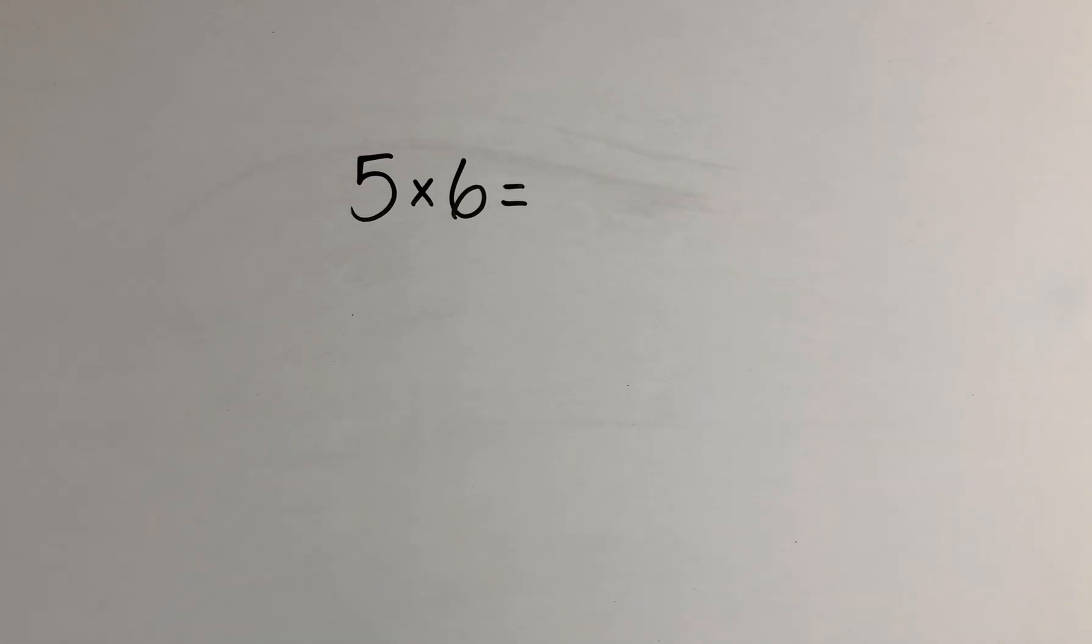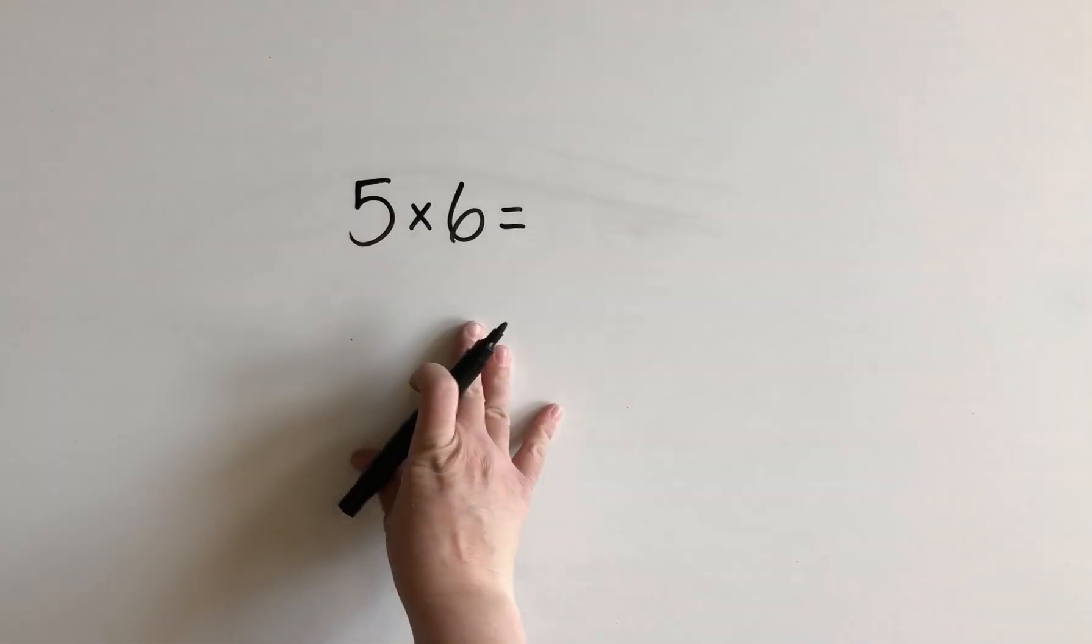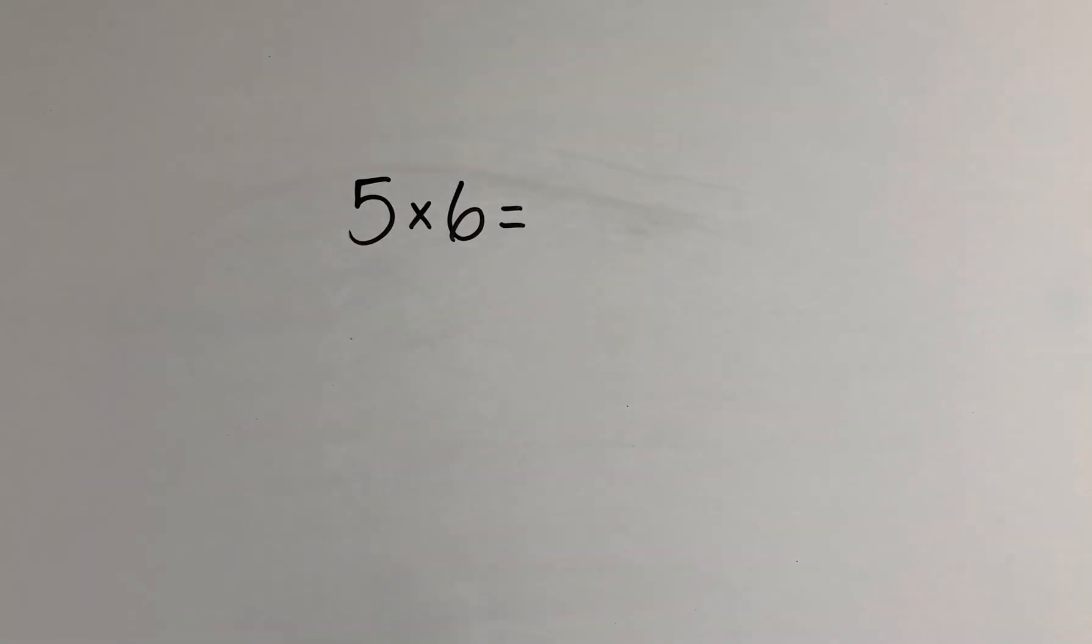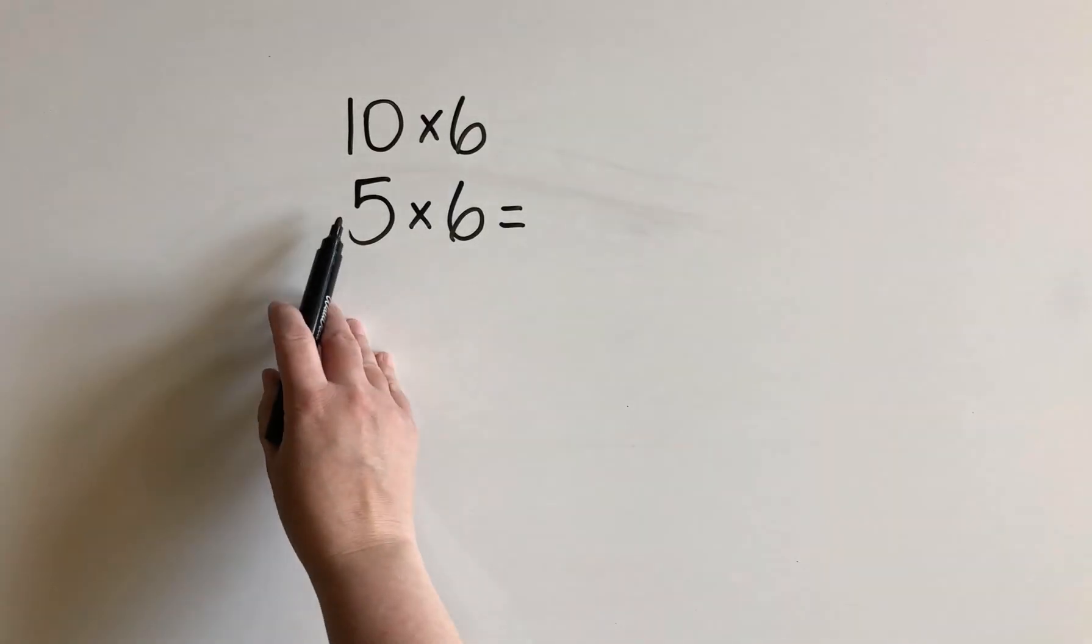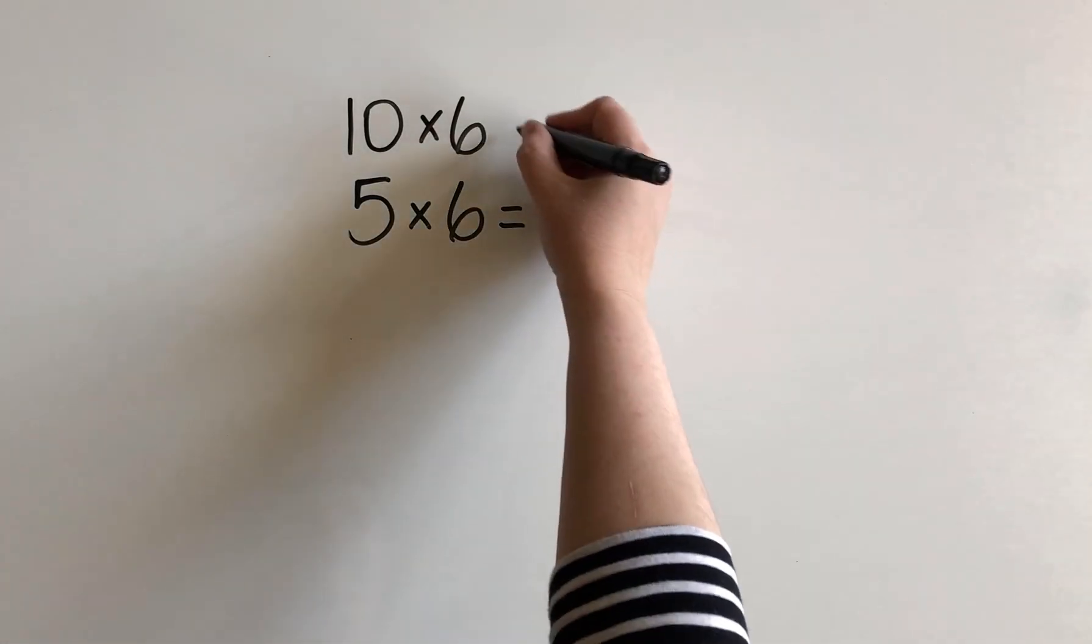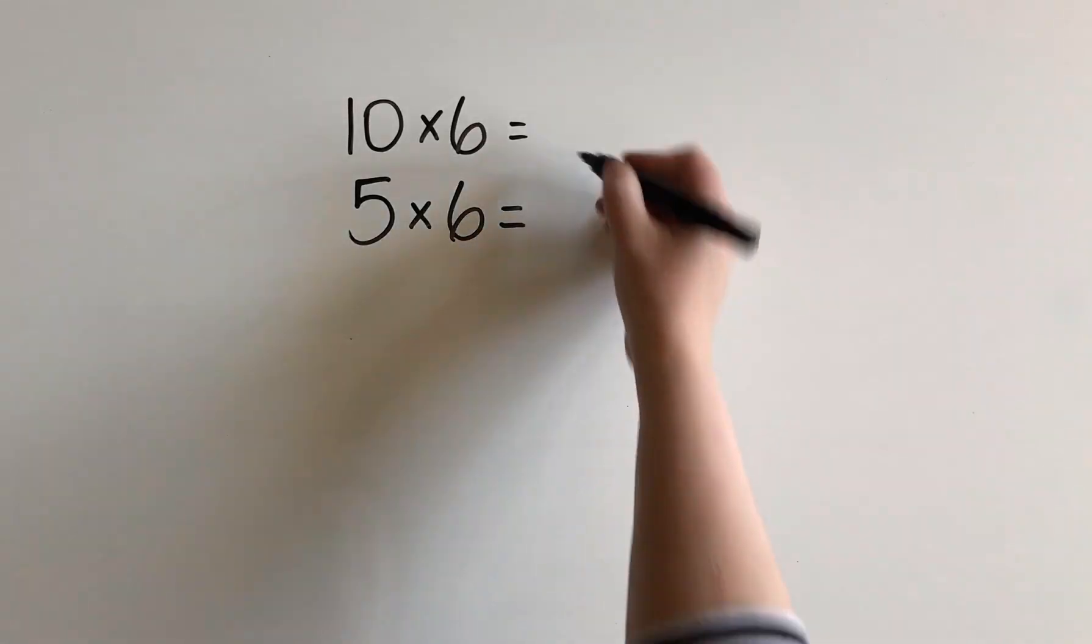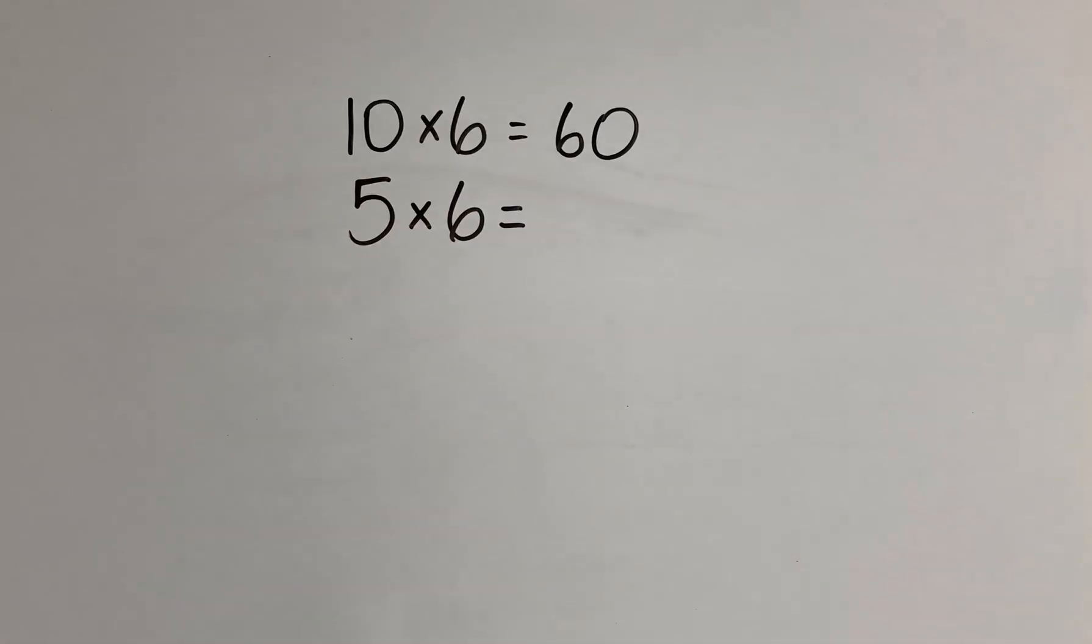But it's always a good plan to learn strategies as well that will help you. So what we're learning today is a strategy. So we're going to start with 10 times 6. We know that 5 is half of 10. Now 10 groups of 6, that's pretty simple. That makes 60.